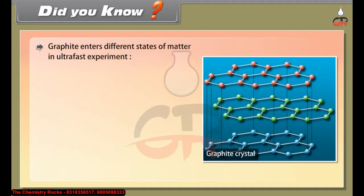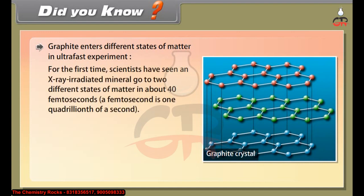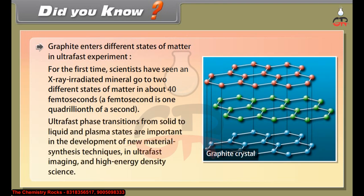Did you know? Graphite enters different states of matter in an ultra-fast experiment. For the first time, scientists have seen an X-ray irradiated mineral go to two different states of matter in about 40 femtoseconds (one quadrillionth of a second). Ultra-fast phase transitions from solid to liquid and plasma states are important in the development of new material synthesis techniques, ultra-fast imaging, and high energy density science.